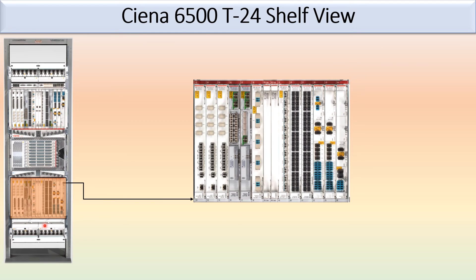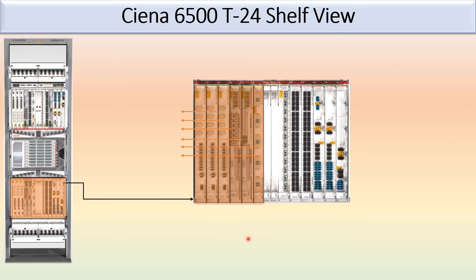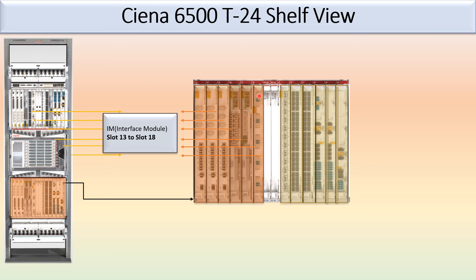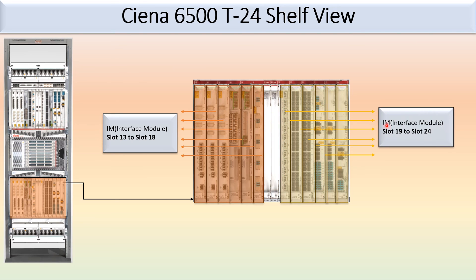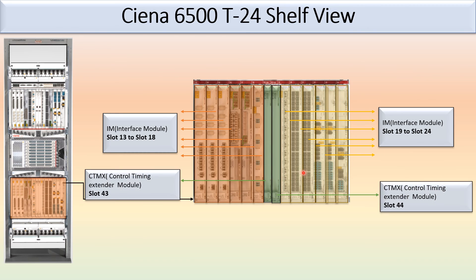On the upper section again are the interface modules, numbered from slot 13 to slot 18 and slot 19 to slot 24 — all fixed for the interface module. Then there is slot 43 and slot 44, which are fixed for the CTMX, control timing extender module.